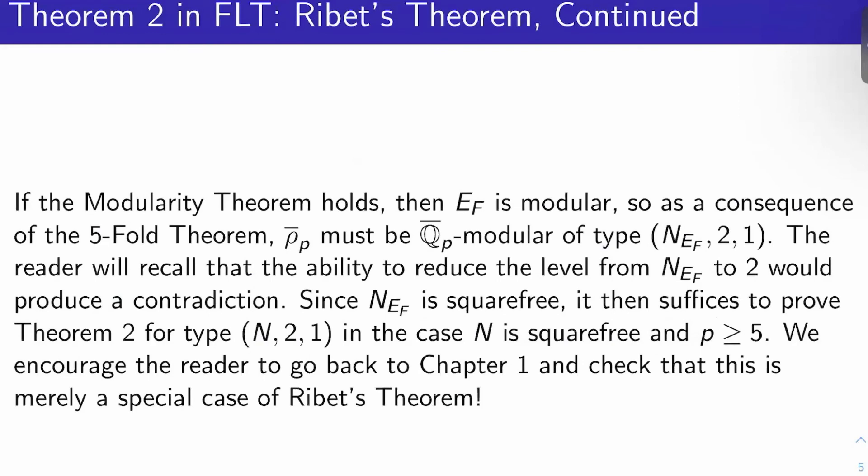If the modularity theorem holds, then E_F is modular, and so by the five-fold theorem, ρ̄_p must be Q̄_p-modular of type (N_{E_F}, 2, 1)—the conductor of the elliptic curve has to match the level of the modular form, which is N_{E_F}, weight 2 also comes from the five-fold theorem and the modularity theorem, and the character is 1 because the modular form is in S_2(Γ_0(N)), which is just S_2(N) with the trivial character equipped.